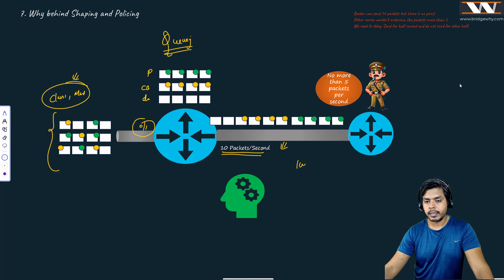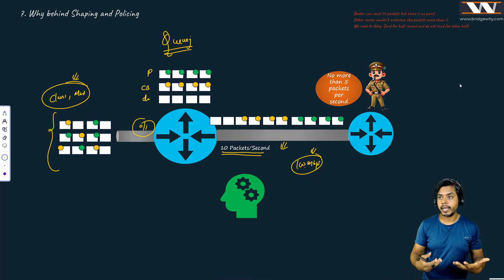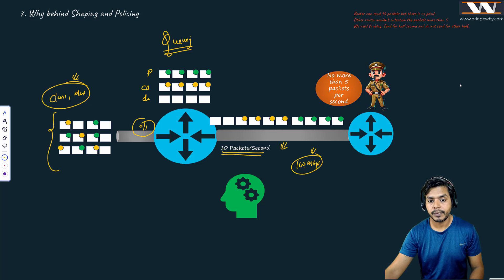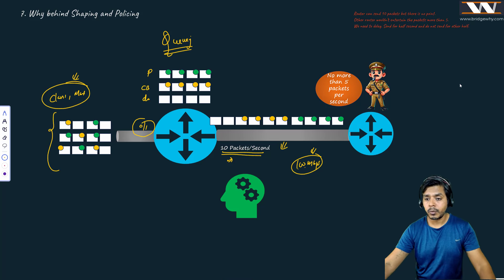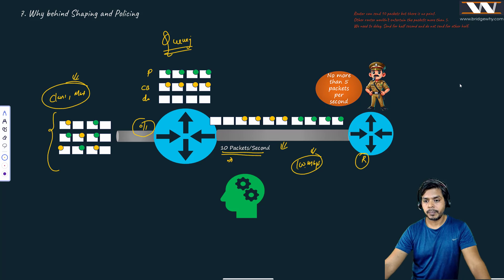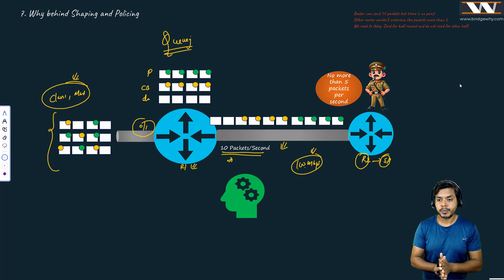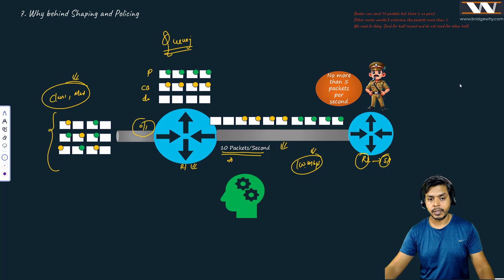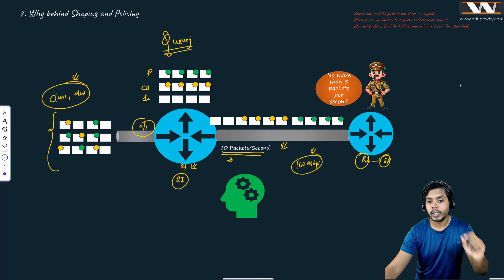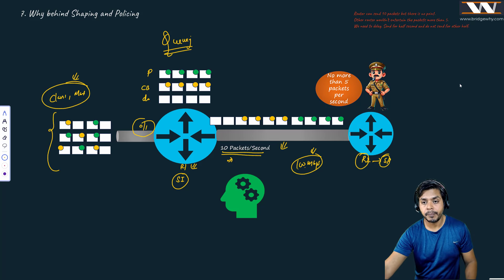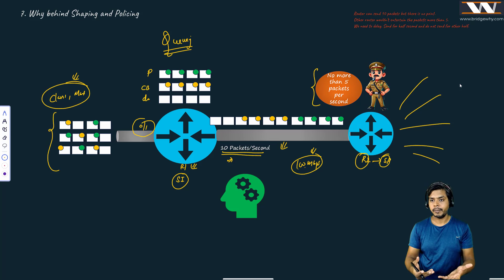For example, a 100 million bits per second interface can send 100 million bits in one second. Instead of working in million bits I'll say the interface carries 10 packets per second. But here is the problem — the router at the other end, say Router 2, belongs to a service provider who has a network serving many customers. That service provider says: from you, R1, if you are Sports India Private Limited, I am going to accept only five packets per second — not more — because I have so many customers and limited bandwidth.